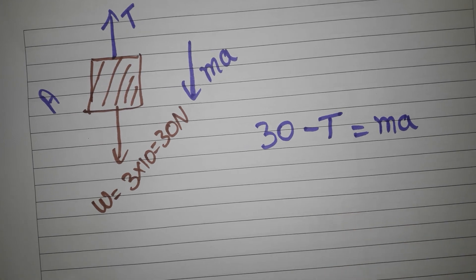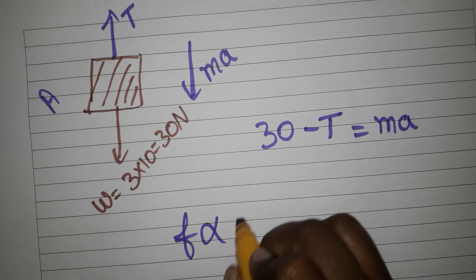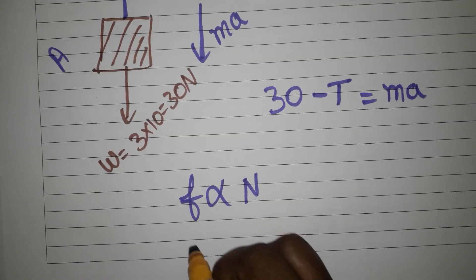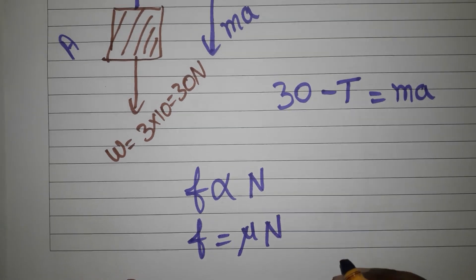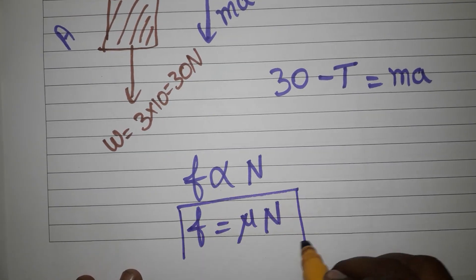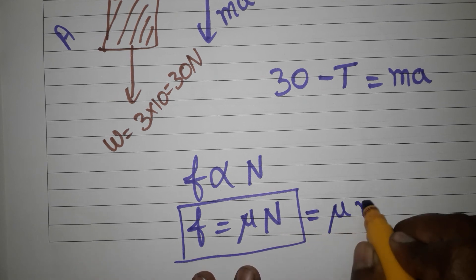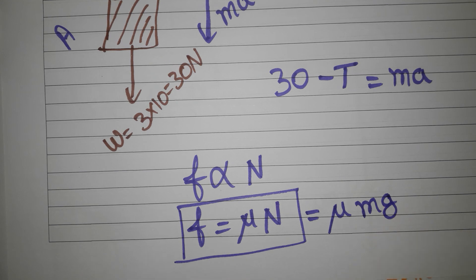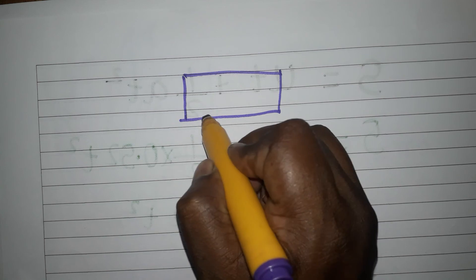Now taking point B. Friction force: friction is equal to mu times of normal reaction force. Normal reaction N equals Mg, so friction equals mu times Mg. This we already know about friction. Now I am taking the point of B, which is the trolley.